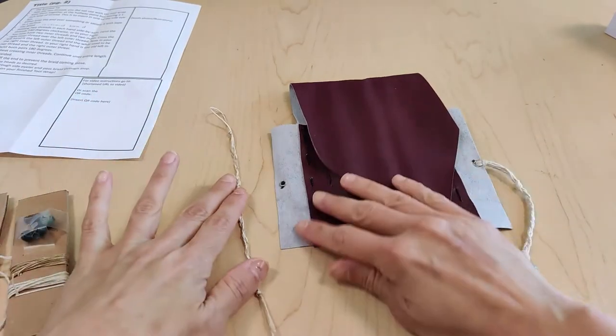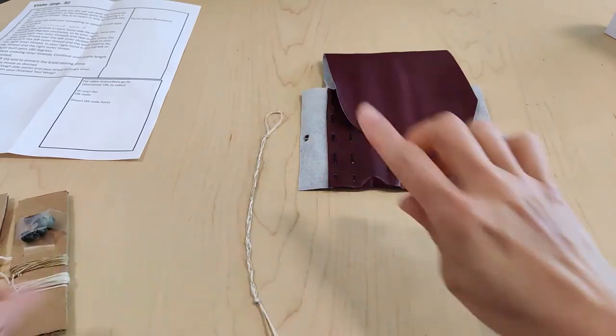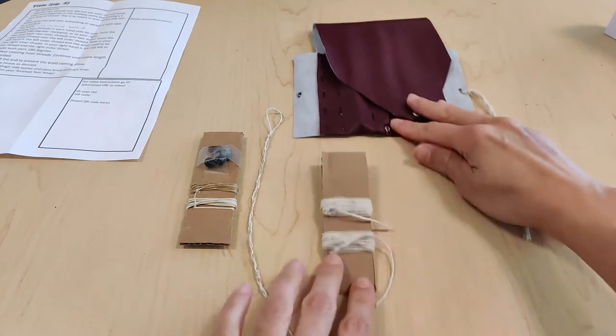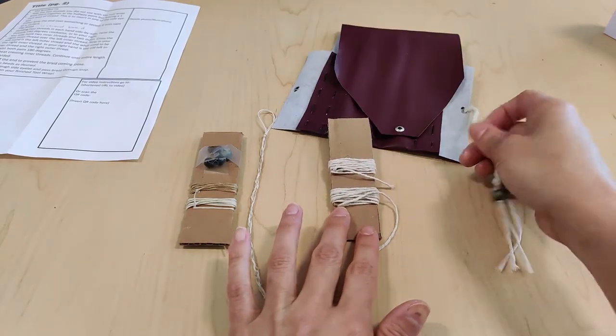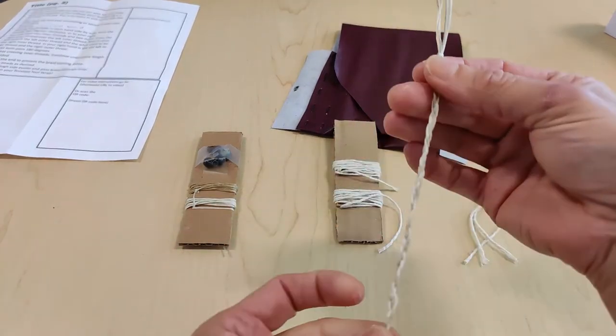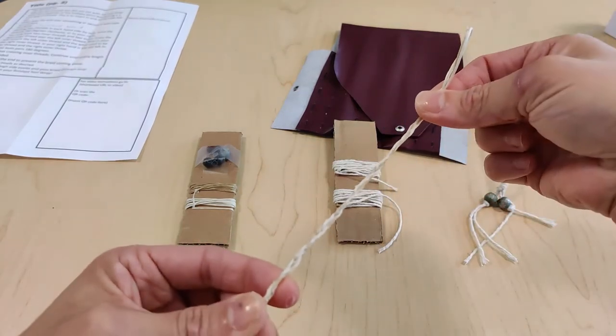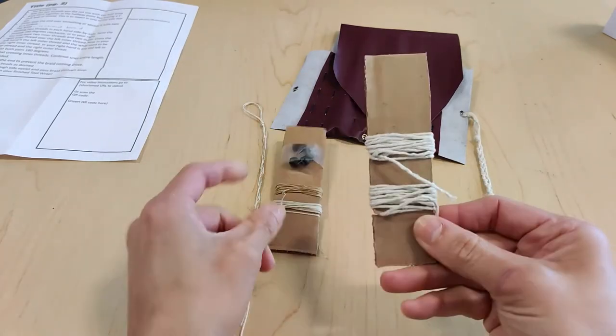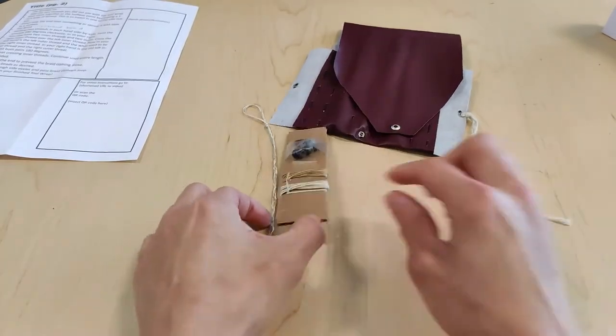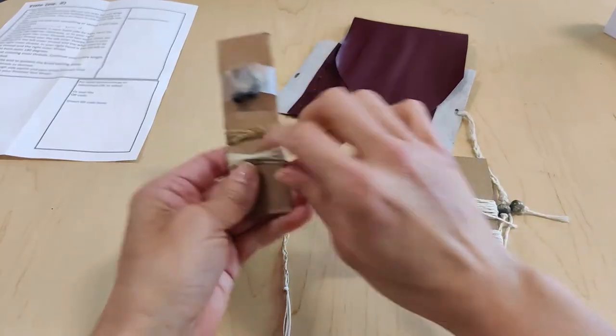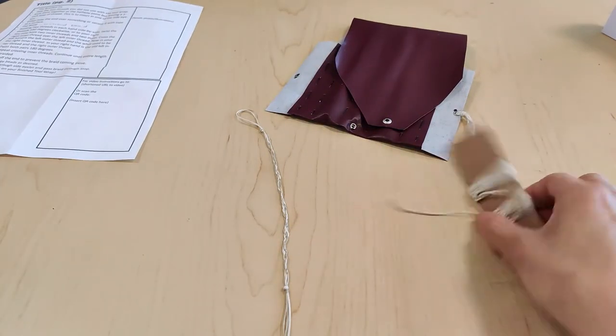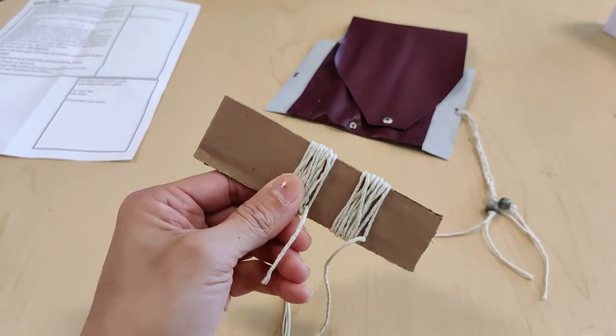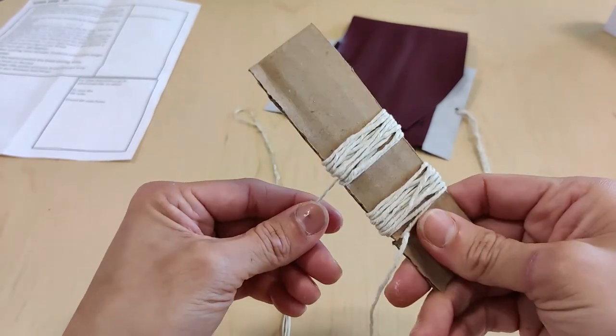You can either use the waxed thread that you have left over, the two colors left, or you can use the twine. The twine is going to make a bit of a thicker braid while the waxed thread is thinner. This is just a personal preference, but you will need two pieces, so you're either going to use your two pieces of twine or your two leftover pieces of waxed thread. For this one I'm going to be showing you with the twine because it's a little bit easier to see on camera.